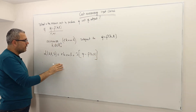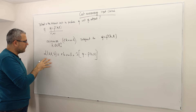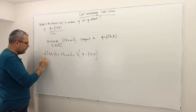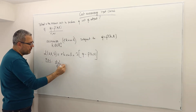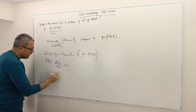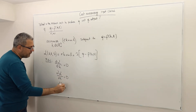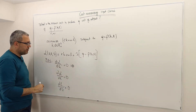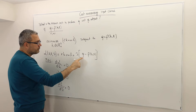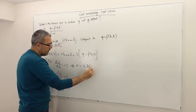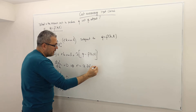To solve this new optimization problem, we use the first order conditions. The partial derivative with respect to capital must be equal to zero — we're finding the critical points. Taking the partial derivative with respect to K gives us R minus lambda times del F del K equals zero.